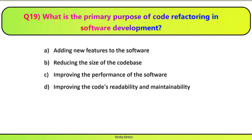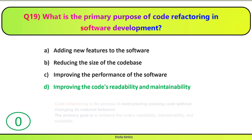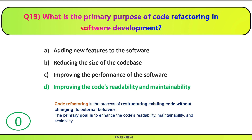Question 19. What is the primary purpose of code refactoring in software development? Code refactoring ka primary purpose kya hai? A. Adding new features to the software. B. Reducing the size of the code base. C. Improving the performance of the software. D. Improving the code's readability and maintainability. Correct answer is D. Code refactoring is the process of restructuring existing code without changing its external behavior. The primary goal is to enhance the code's readability, maintainability, and scalability.